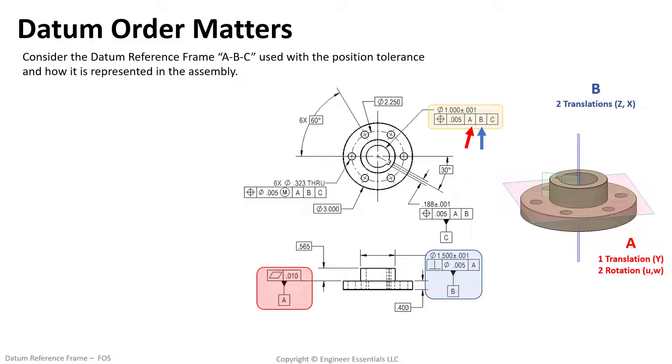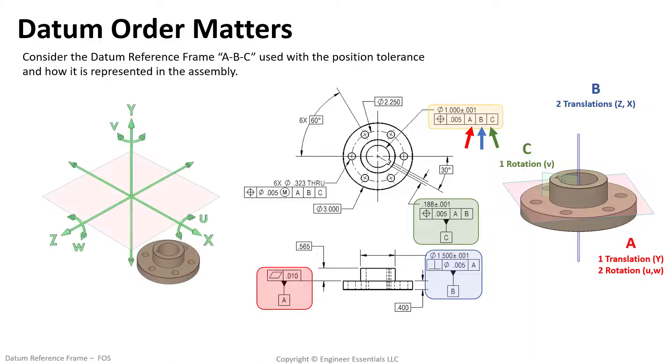As I mentioned before if there are no features on this part that require timing we could stop here. However this part has a keyway that is basically located in respect to the bolt hole pattern. In order to make sure the bolt hole pattern on the part times up with this keyway we will need to lock down that final degree of rotation. That's where datum C comes in. Using the width of the keyway as a feature of size we can put the datum feature symbol on it and lock its mid plane down as datum C. Datum C is a theoretically perfect plane.